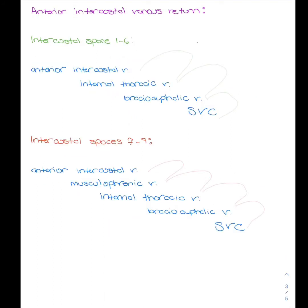Anterior intercostal venous return for intercostal spaces 1 through 6 goes from the anterior intercostal vein to the internal thoracic vein, to the brachiocephalic vein, and ends at the SVC.